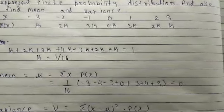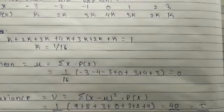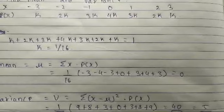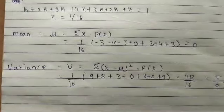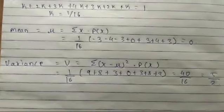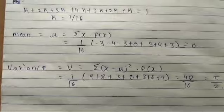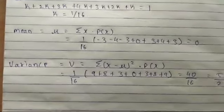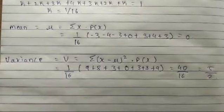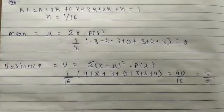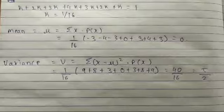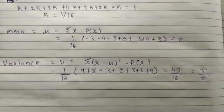Next, we are going to calculate variance. Variance is calculated by sigma x minus mu whole square of p of x. So after calculating x minus mu whole square, we are getting values 9 plus 8 plus 3 plus 0 plus 3 plus 8 plus 9. So by taking 1 by 16 as common, we are getting 40 by 16.